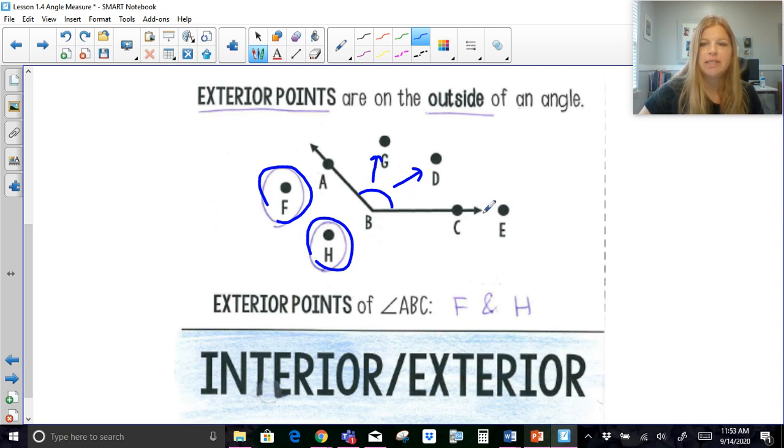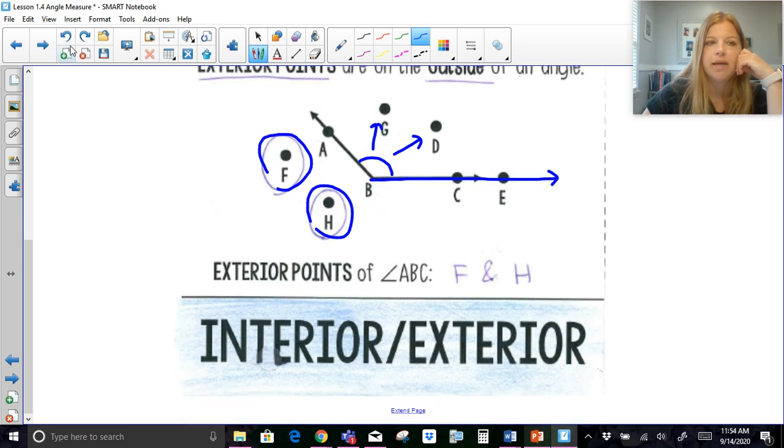And again, just like in the previous example, E would not be in the exterior. Yes, it's not here, but it's actually just on the line. If I was to extend this ray for my point, through that point rather, E would be directly on the line of that ray.